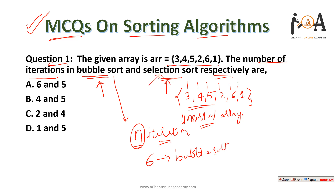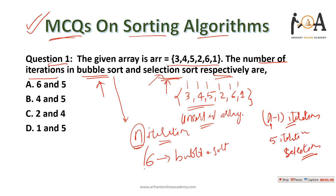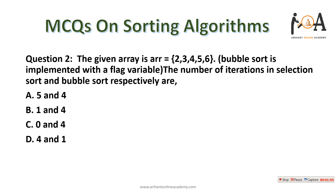For selection sort, it is very insensitive to the sorting order — whatever order the array may have, it will always take n minus one iterations. With six elements, that is five iterations for selection sort. So six and five respectively is the answer — option A is correct.